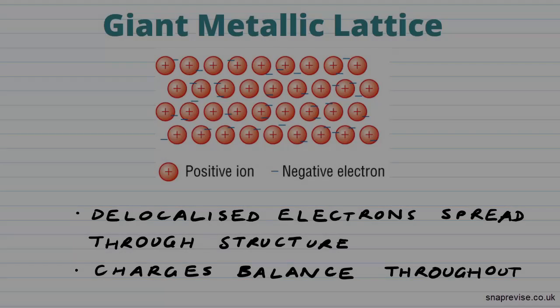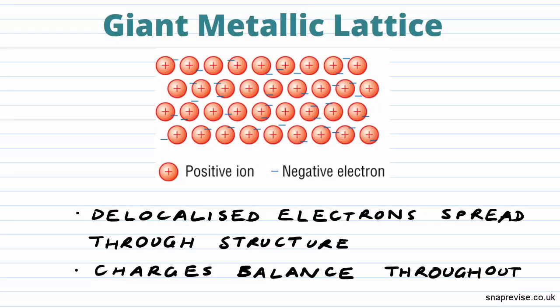What do we mean when we talk about the giant metallic lattice? Well, we've come across a lattice structure in terms of giant ionic and covalent lattices, and what it is, it's when we have millions of ions put together in layers and it's a 3D structure. This is quite similar to what we have in metals, except in metals the arrangement of the positive ions and negative electrons are slightly different.